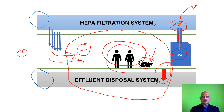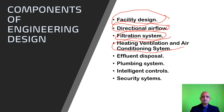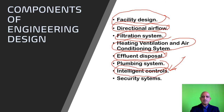Personnel must also don proper personal protective equipment to work in this facility. The engineering design is governed by the facility design itself — this is where engineers come in. Components include directional airflow, filtration systems, heating, ventilation and air conditioning (HVAC) systems, the effluent disposal system, plumbing systems, intelligent controls involving computers and devices that link your laboratory to a network and can be monitored from a remote hosting station, as well as security systems responsible for biosecurity management at the facility.